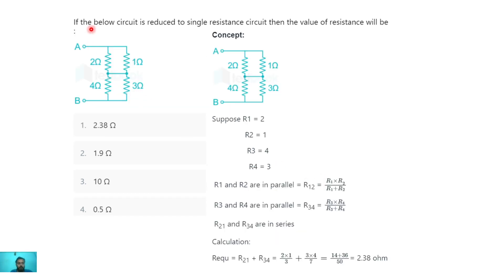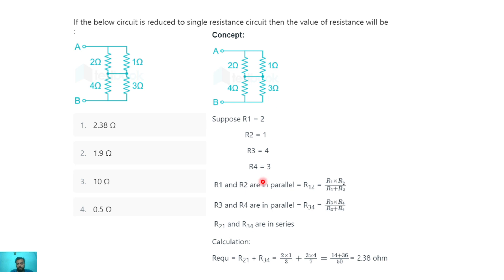The next question: if the below circuit is reduced to a single resistance circuit, the value of resistance will be — and we have to calculate the equivalent resistance between point A and B. Here the 2 ohm and 1 ohm are in parallel, and the 4 ohm and 3 ohm are also in parallel. Let R1=2 ohm, R2=1 ohm, R3=4 ohm, and R4=3 ohm.